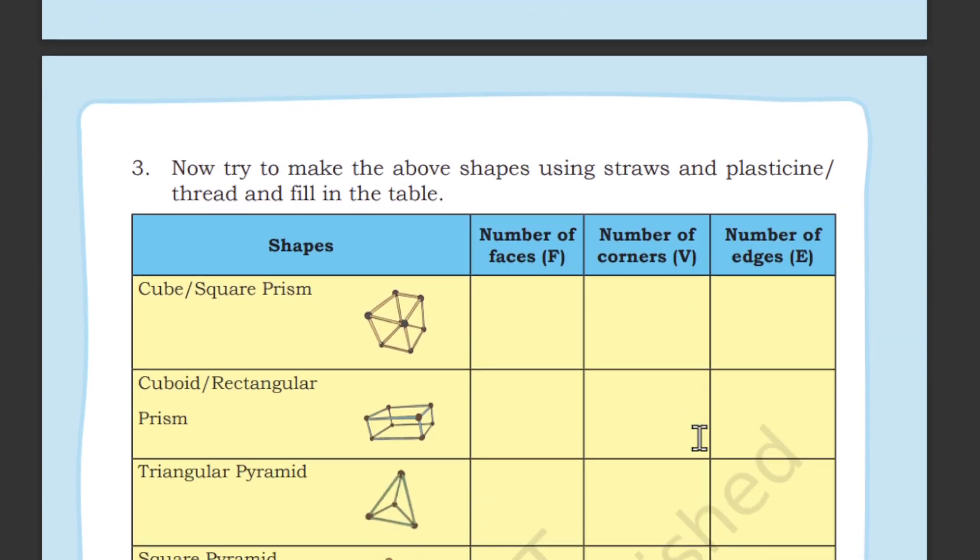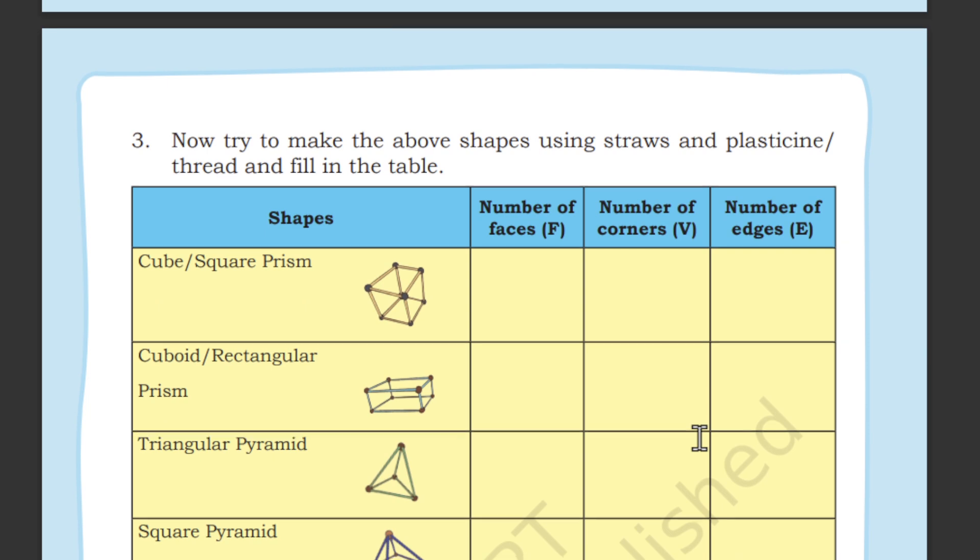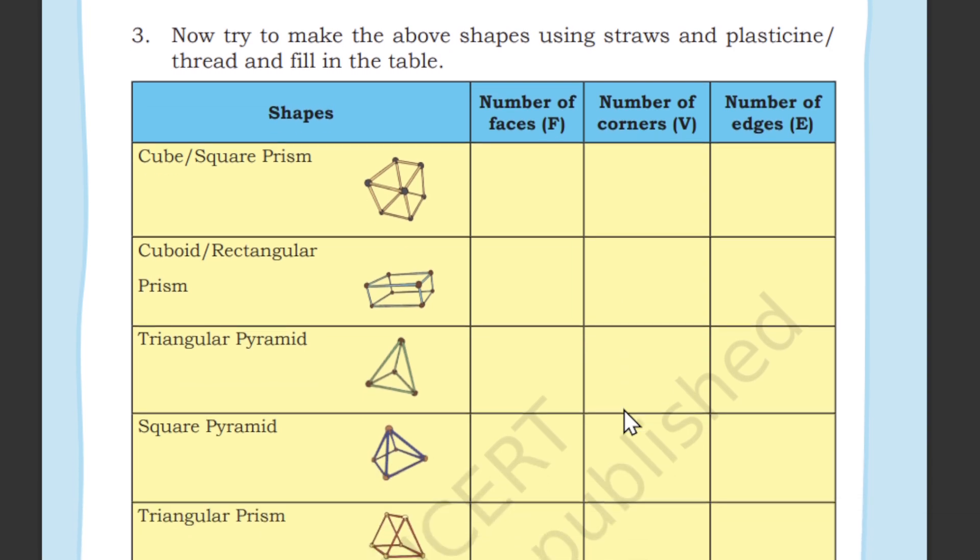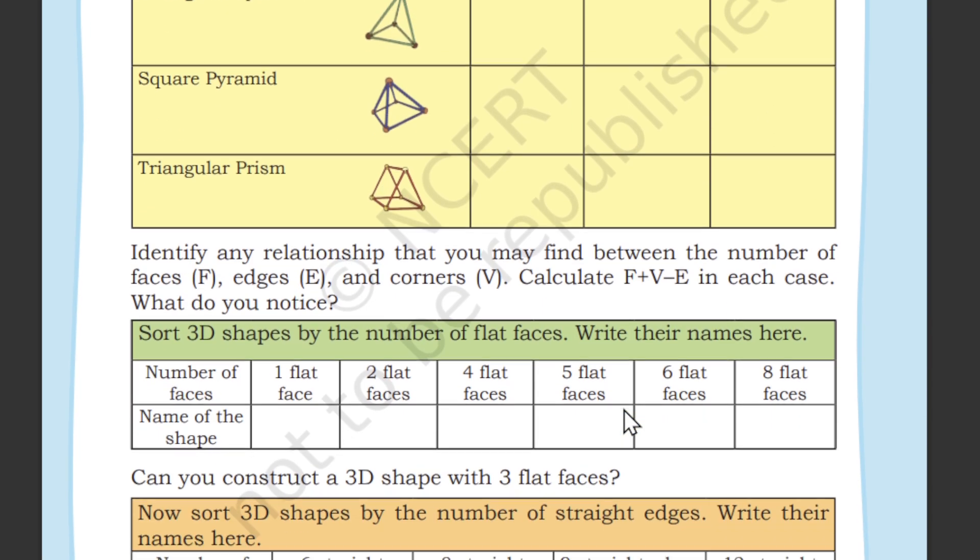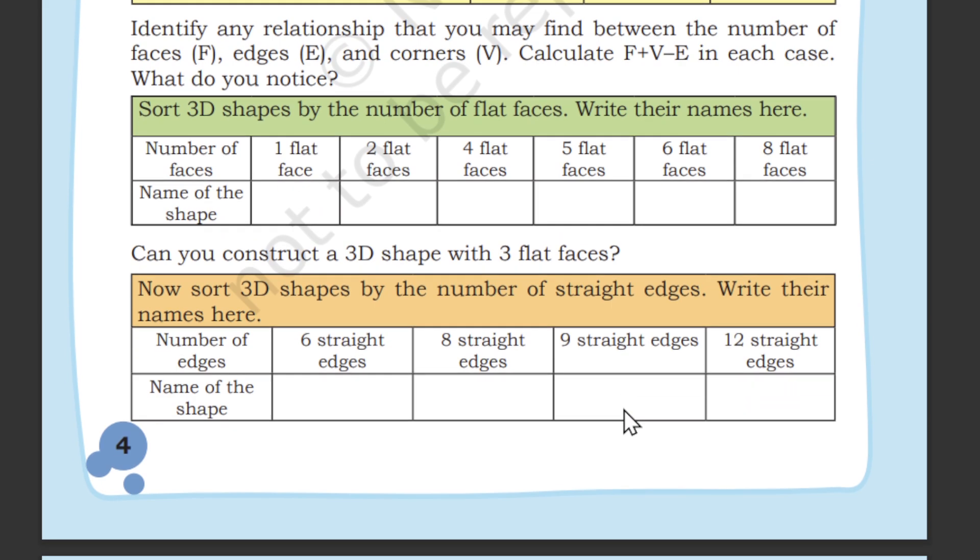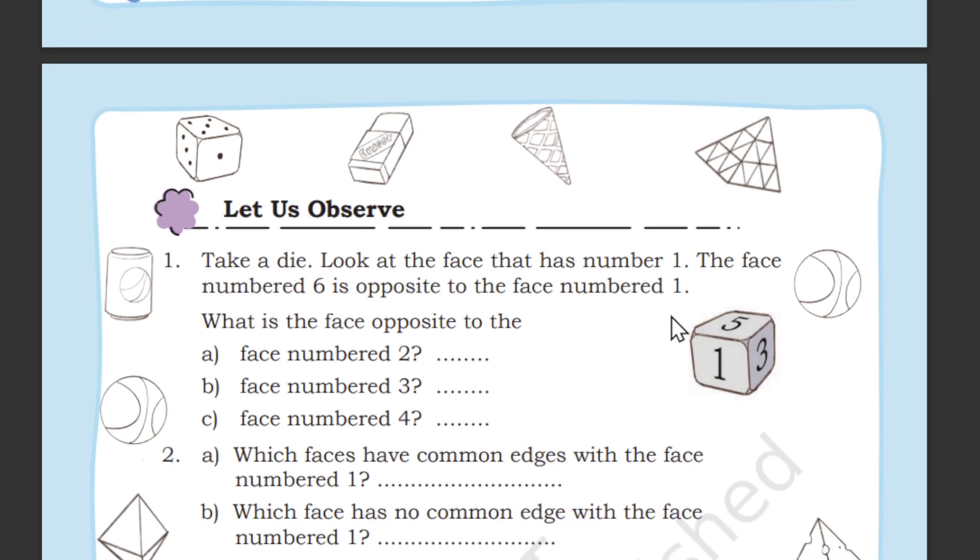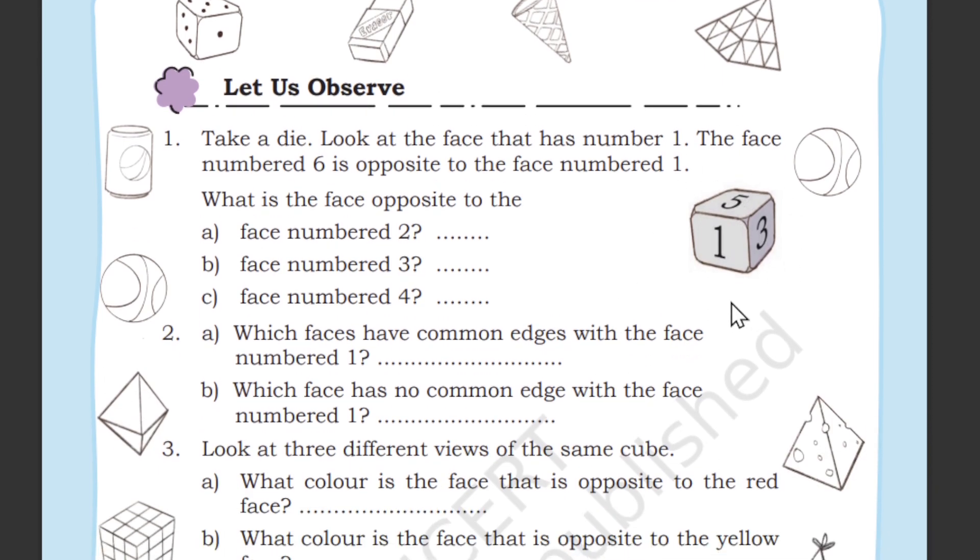Number of faces, corners, and edges in all types of prisms and pyramids, both for 2D and 3D shapes, the flat faces, the straight edges. We learned about the cubes, the opposite face of cube and learned about the dice.